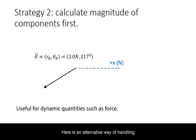Here is an alternative way of handling vector components. In this strategy, we will calculate the magnitudes of the components first, and let the physics equations later handle their direction. These are useful for problems involving force.